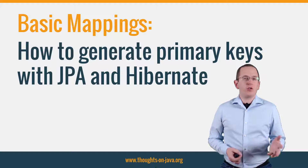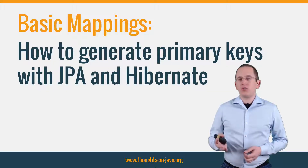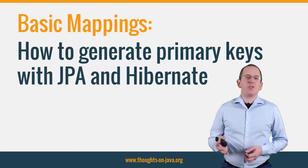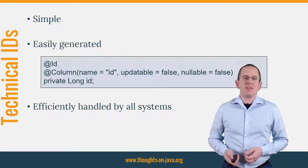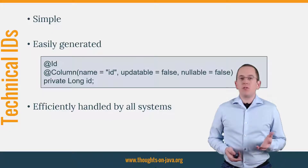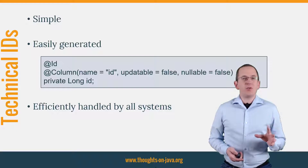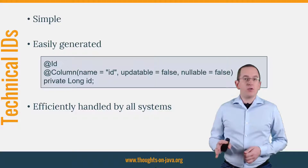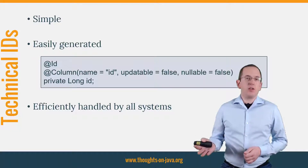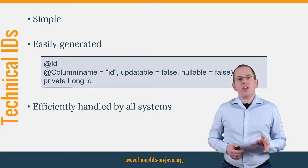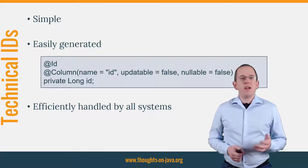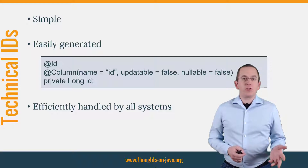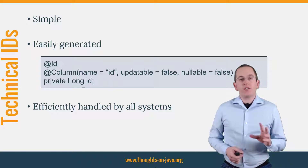Do you use natural keys or UUIDs? Or do you generate technical IDs? Please post a comment below and tell me about it. I prefer to generate simple numerical technical IDs, like you can see in the code snippet, instead of using natural keys which often require the combination of multiple attributes. Technical IDs are easier to manage and all involved systems, mainly the database and Hibernate, can index them very efficiently. This allows you to focus on the business logic of your application and avoids performance issues.